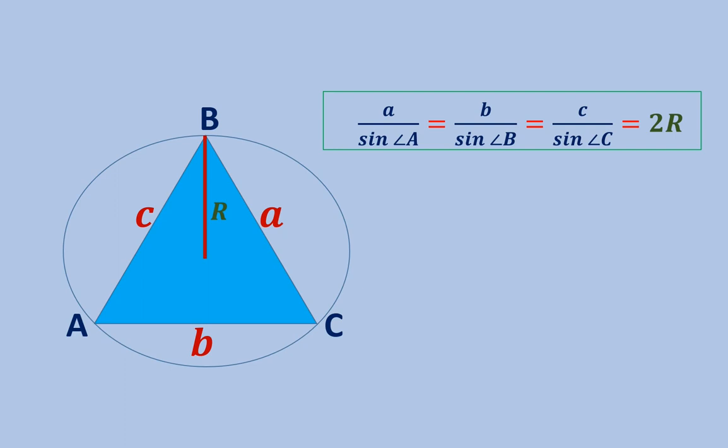This means that to find the radius it is sufficient to have the length of any side of the triangle and the sine of the opposite angle of that side. Let us now consider a problem and apply the sine theorem to find the radius of the circle circumscribed around the triangle.